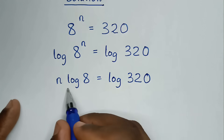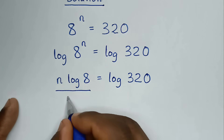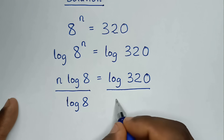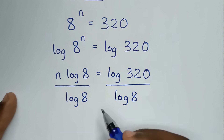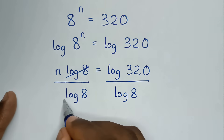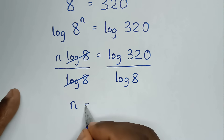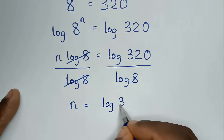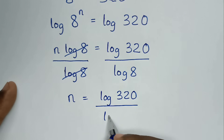Then we'll divide by log of 8 on both sides. So log of 8 cancels log of 8, and it will be n is equal to log of 320 over log of 8.